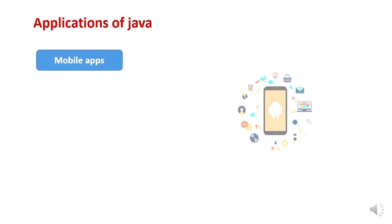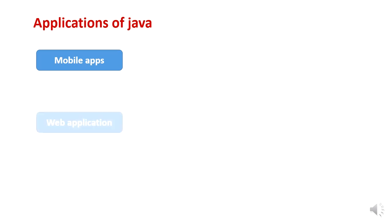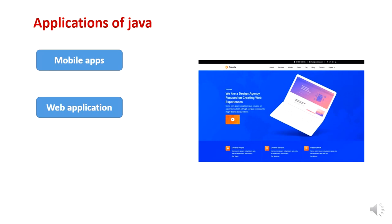The next application is web applications. What are web applications? They are the various websites we have been using. For example, in the banking sector we use web applications, and in various financial organizations we use web applications. Such web applications can also be built using Java.